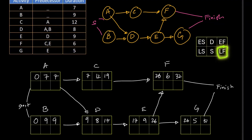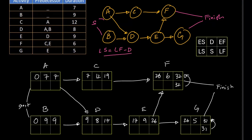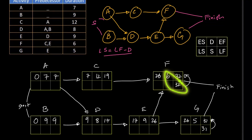For the backward pass, the LF for the finishing activities of the project remains the same as EF. There are two finishing activities — F with 32 and G with 31 — so their LF values remain the same. Next, we find LS. The formula is: LS equals LF minus duration. For G: 31 minus 5 equals 26. For F: 32 minus 6 equals 26.